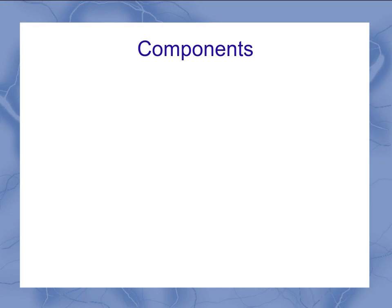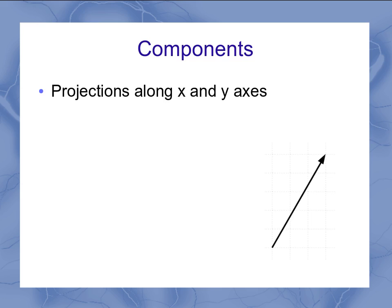Let's talk about components. If I've got this vector shown as an arrow, how do I describe that mathematically? Well, one of the methods we can use is components, which is the projection of that arrow along the x and y-axis, like this.